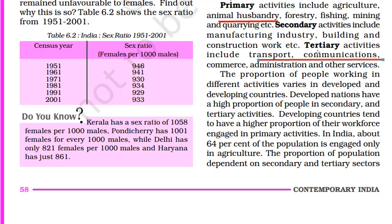When any country starts its development path, primary activities are most important. As a country develops, the primary sector shrinks and people work more in secondary and tertiary activities. In developed countries like Germany or America, the tertiary sector dominates the GDP. But India is still on the developing path. In 1951, the primary sector contributed significantly, but today it only contributes 14% and will keep on shrinking.